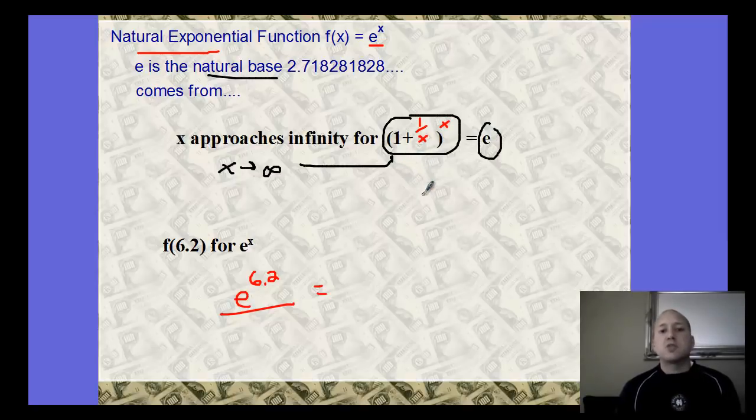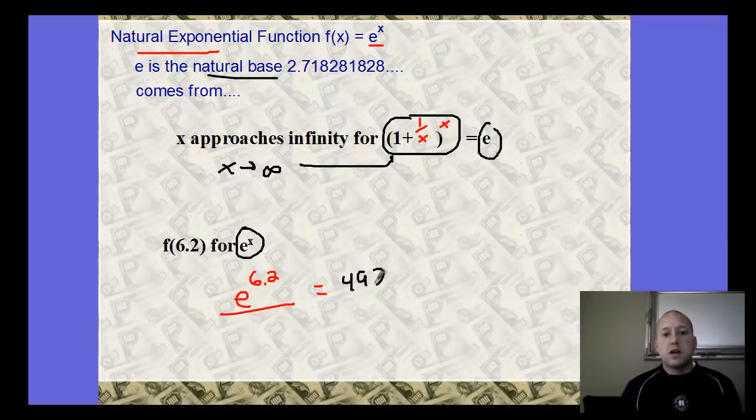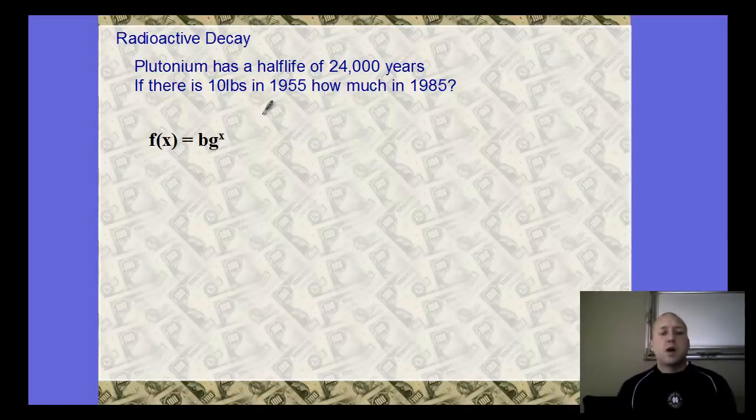We'll talk more about that in chapter 11. This is where it comes from. So e to the x, that value. If you want to find f(6.2) for e to the x, there's a key in your calculator. Hopefully you can try to find that e to the 6.2. If you evaluate that, just to test to see if you can plug that in correctly, you get 492.749 if you round that. So that would be the value you would get.